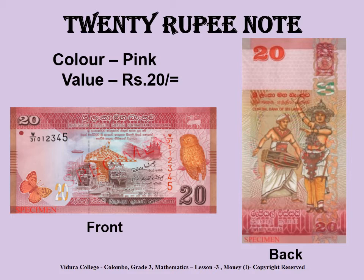The butterfly that appears on the lower left corner is known as the Baronet. On the back side of the note in the center, you will see a traditional Vesnatuma dancer dancing to the tune of the Gatabera drummer next to him. The Pun Kalasa or the pot of plenty, which is a symbol of prosperity, is on the top right of the note. A Liavella or the stylized floral motif appears on the right side of the note.